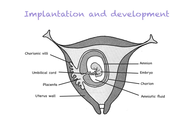Everything we look at today — the role of the placenta, the umbilical cord, and all of that — happens when it's just an embryo for the first 12 weeks, and then after 12 weeks when it is now a fetus, it is still continuing to happen. So this is the structure of the womb when it is developing a baby or an embryo.